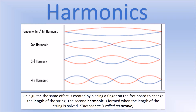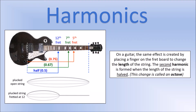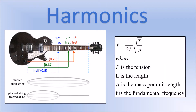When we double the frequency, in musical terms we describe that as going up one octave. On a guitar, the frets are where you place your finger to change the length of the string. If you put your finger on the 12th fret you are halving the length of the string, which doubles the frequency — meaning the note is one octave higher than the open string.